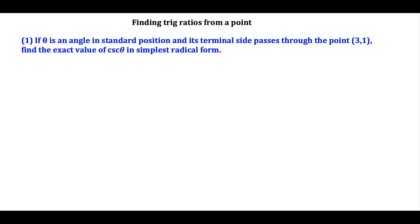What's up, I'm Vin, and today I want to show how to find trig ratios from a point. So we have theta as an angle in standard position, and the terminal side passes through the point (3, 1). What we want to do here is find the exact value of cosecant theta.